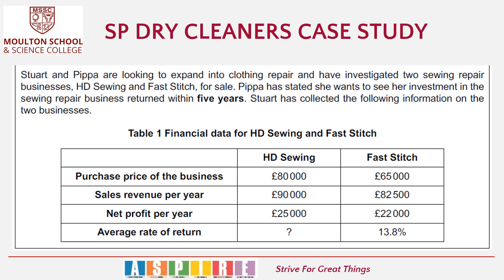Let's look at the second part of the case study. Stuart and Pippa are looking to expand into clothing repair and have investigated two sewing repair businesses: HD Sewing and Fast Stitch, for sale. Pippa has stated she wants to see her investment in the sewing repair business returned within five years. Stuart has collected the following information on the two businesses: the purchase price, the sales revenue, the net profit and one of the two average rate of return figures — indicating that you're going to be asked to calculate the average rate of return.